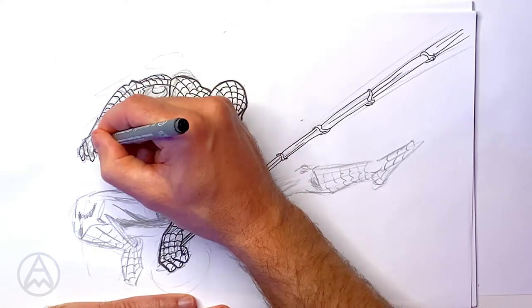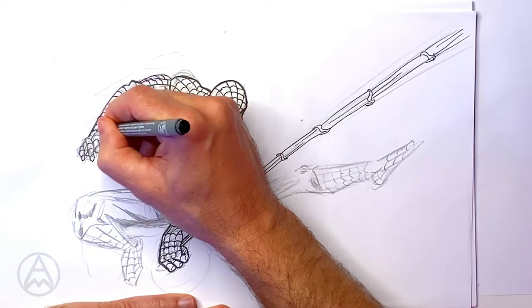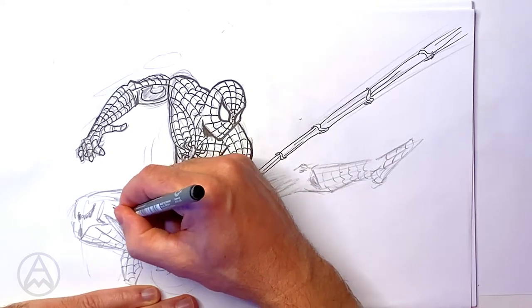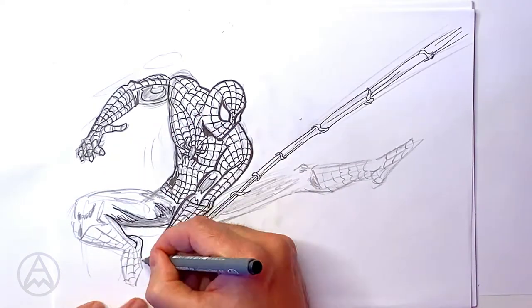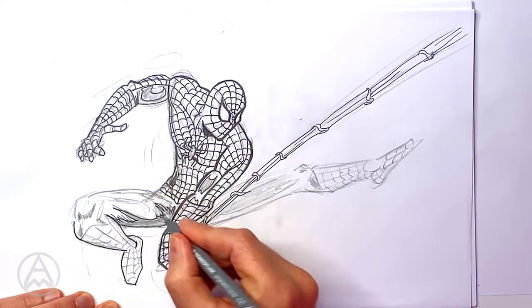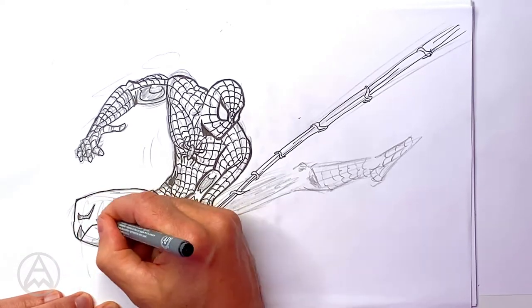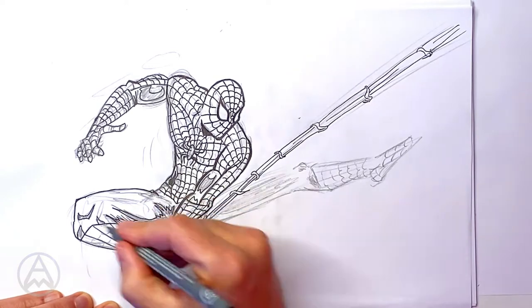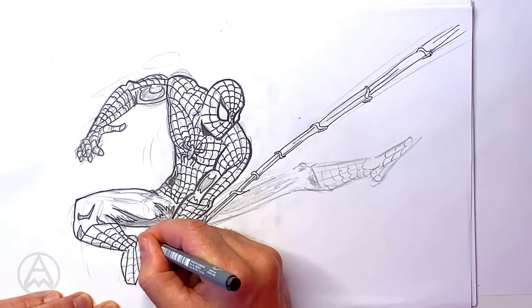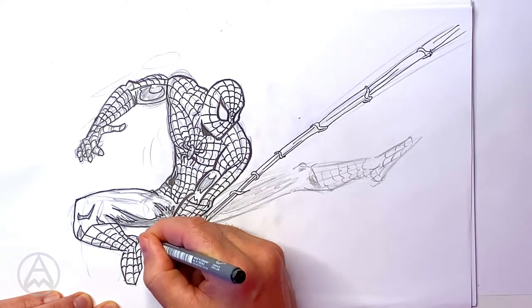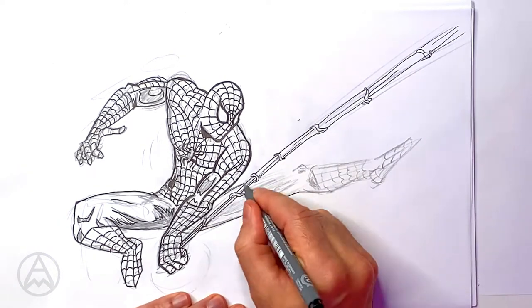So like drawing Spider-Man, you've got to do the web strand by strand. It's not necessarily hard, it just takes a bit of time, that's all. So I'm just defining the leg there. Now I'm just putting my shadows, following the shape of the leg and putting my webs. Now I'm working on the other leg.